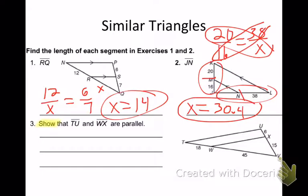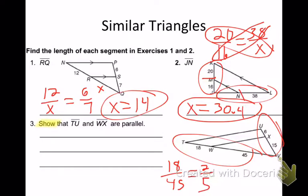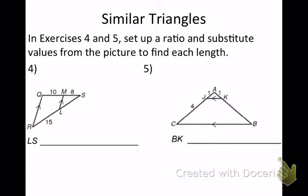Then I have number 3. Number 3 says to show that TU and WX are parallel. Well, to show it's parallel, what do you know about the ratios here? The ratios would have to be the same. So let's do 18 over 45. What would 18 over 45 simplify to? 2 over 5. Do I divide them both by 9? 2 over 5. Then do 6 over 15. If I take 6 over 15 and simplify that one, 2 over 5 as well. Are the ratios the same? Yes. Because the ratios are the same, are then my lines parallel? Yes, they are.